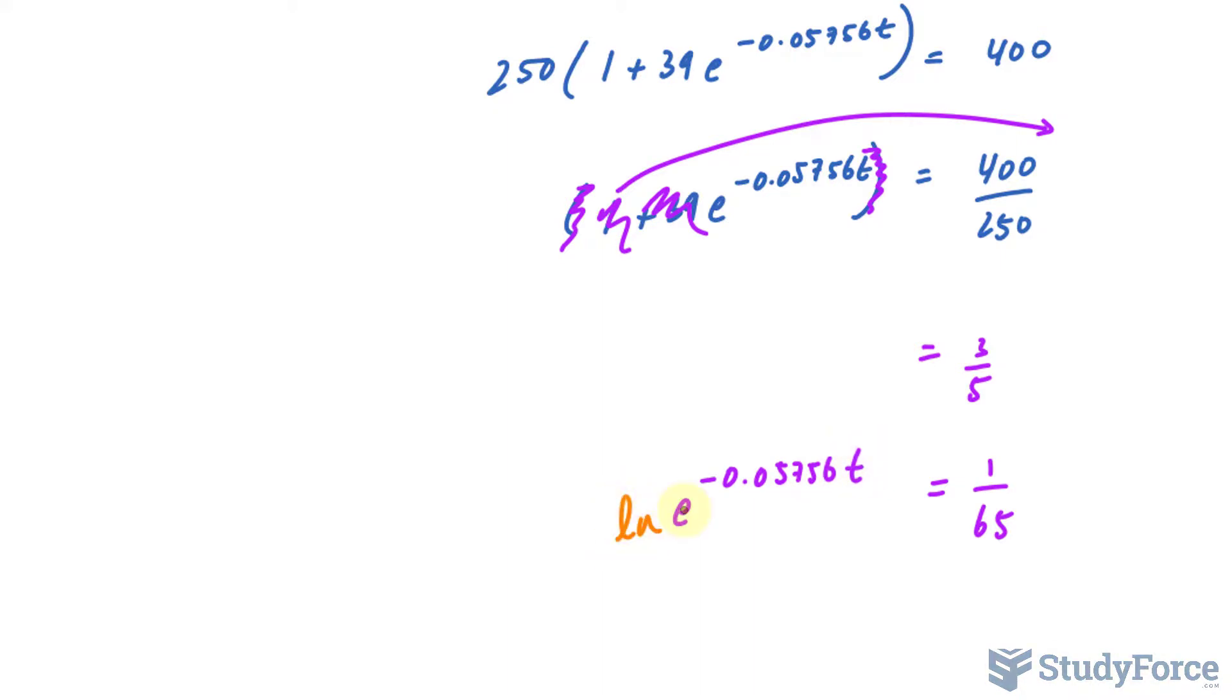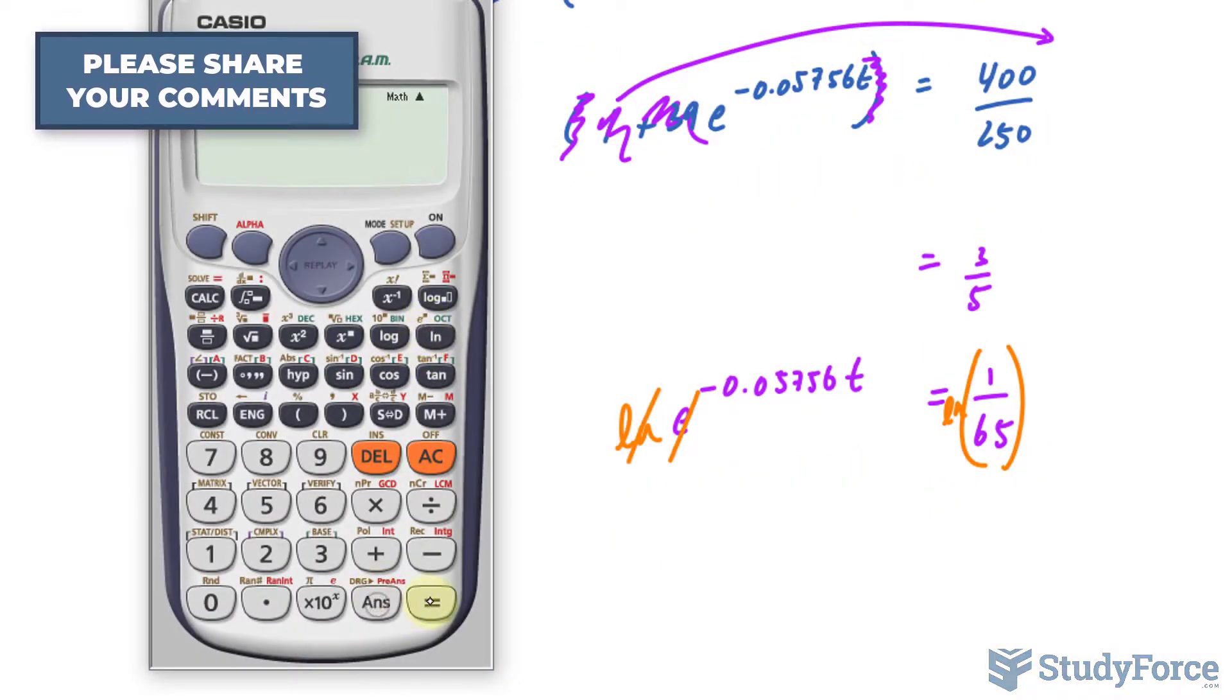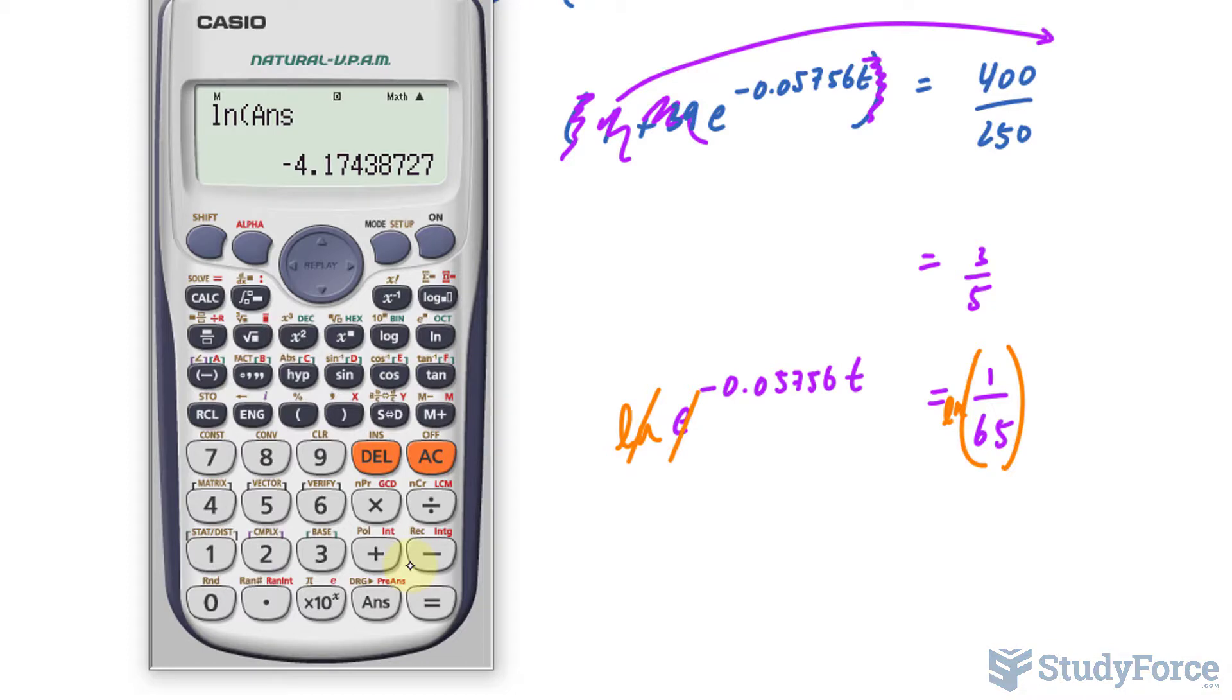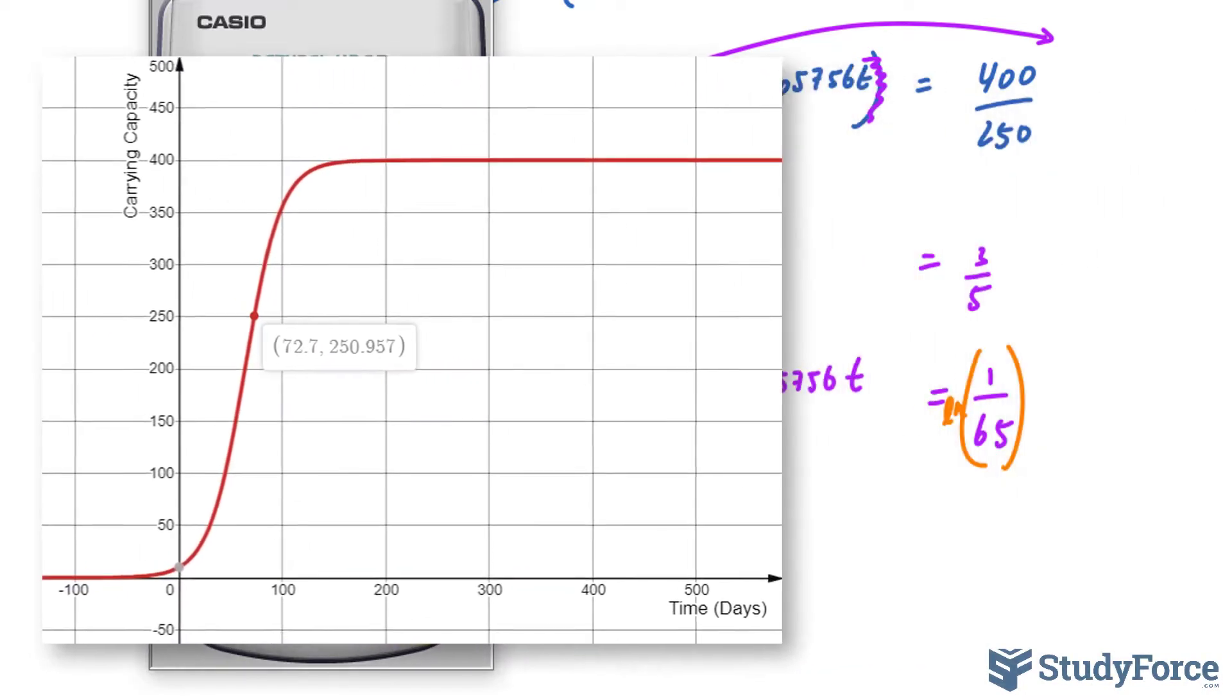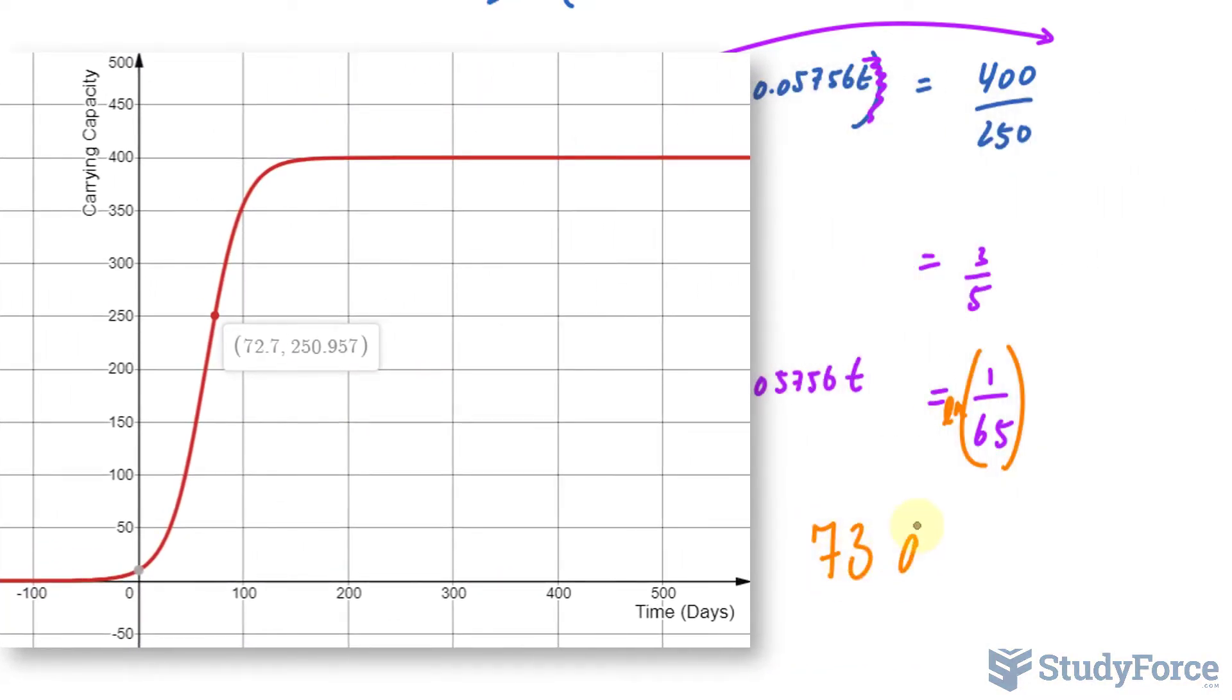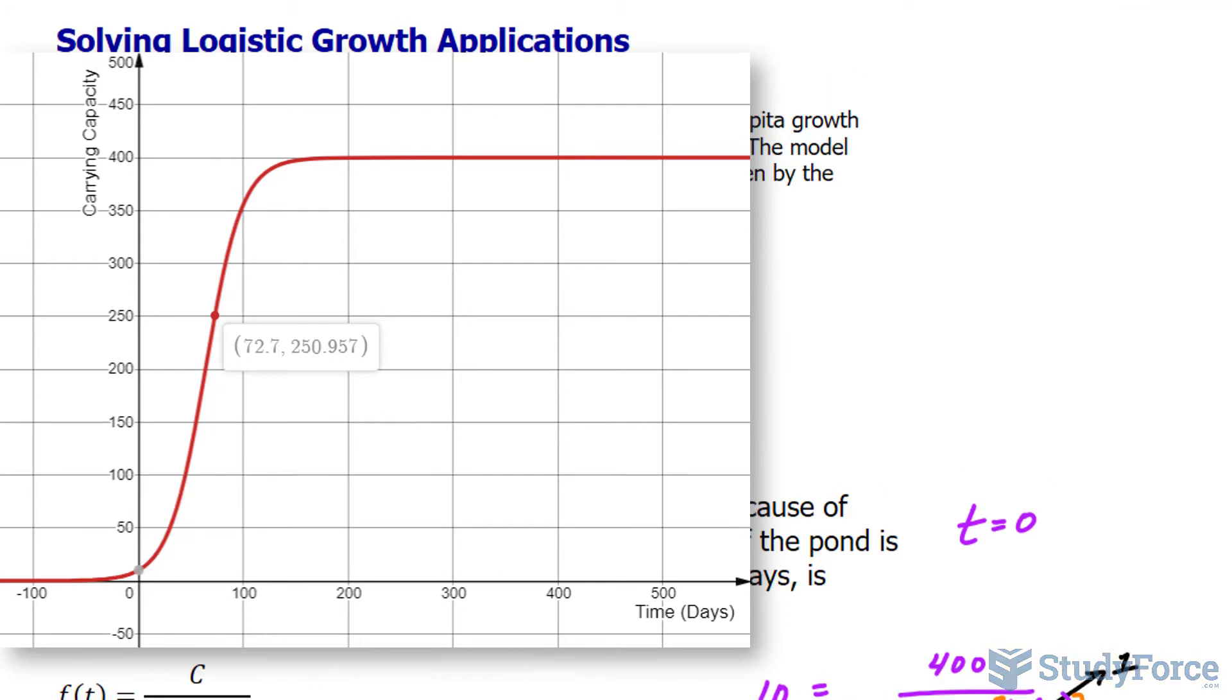I ln both sides. That will get rid of the e. So I'll ln this number. Gives me negative 4.174. Don't be alarmed just yet. Because we're dividing by, next, a negative value. So divide by negative 0.05756. And we get 72.5. We need to round this to the nearest whole. And that is 73 days. So it'll take 73 days for 250 goldfish to be found in this pond. After that initial 10. And so there you have it. That is how to solve logistic growth applications.